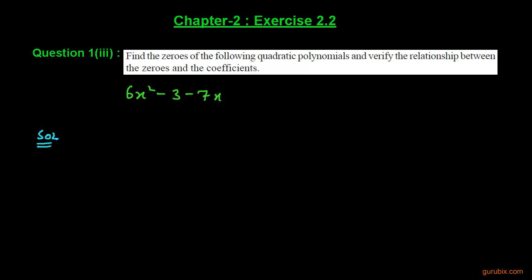Welcome friends. Here is the third part of question number one of exercise 2.2 of chapter 2. The question says: find the zeros of the following quadratic polynomial and verify the relationship between the zeros and the coefficients.